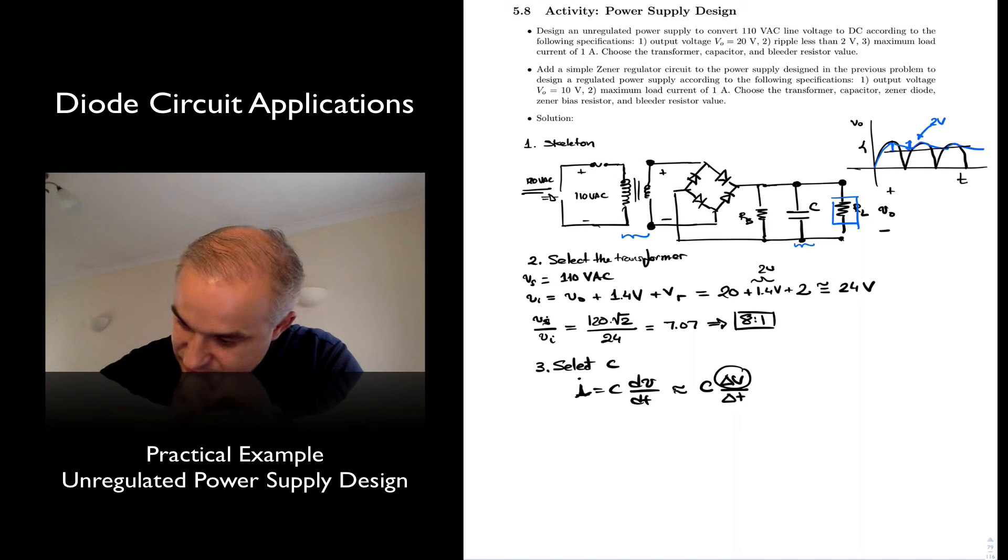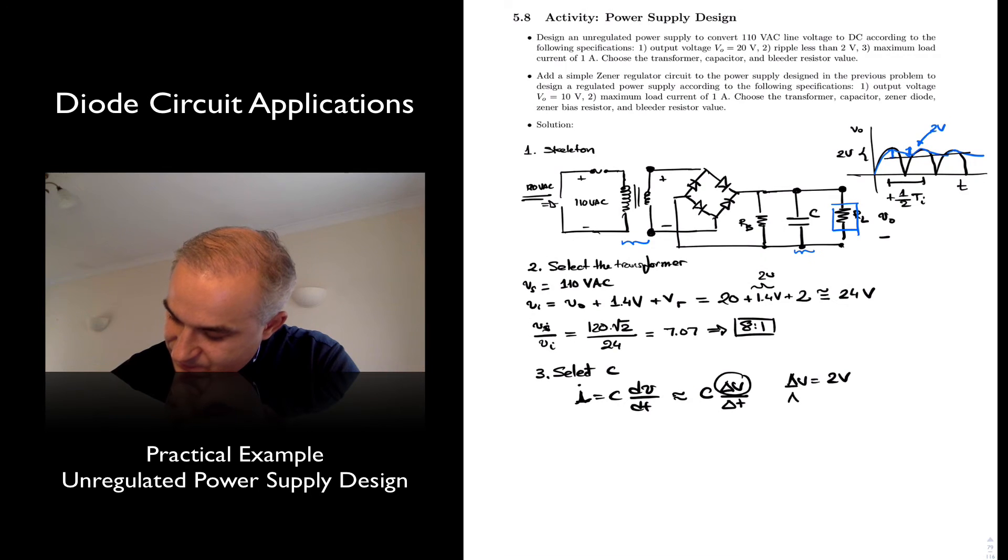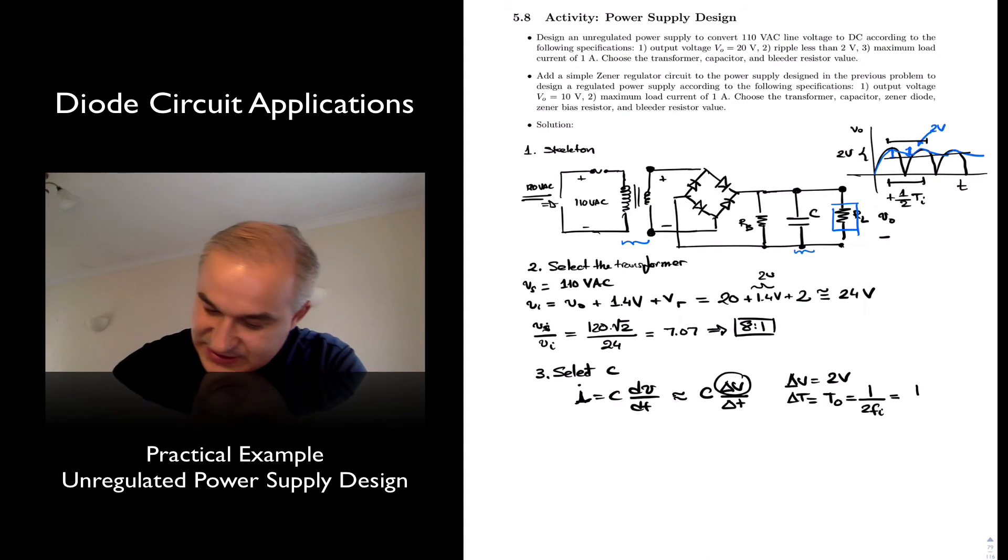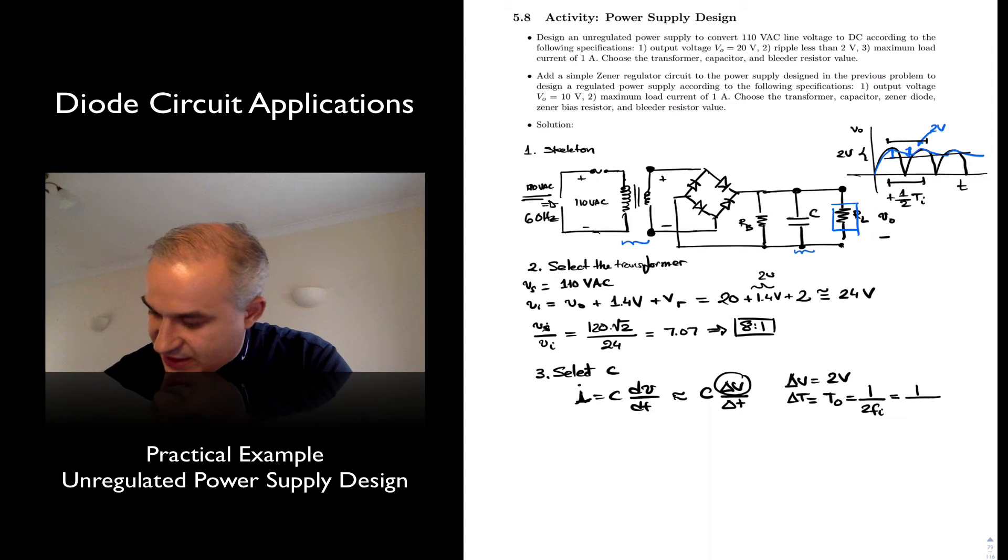The change in voltage, the maximum that we allow is 2 volts, and the time we know it, because it's one half the period at the input. So what we have, difference in voltage, 2 volts maximum, and dt in this case is the period of the output, which is 1 over 2, the frequency of the input. Remember, this period is half of the input, or twice the frequency, the frequency is 60 hertz if it is an AC line, and so we get 2 times 60, or 8 milliseconds.